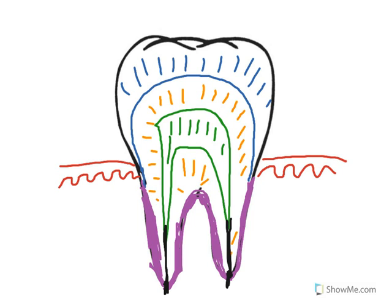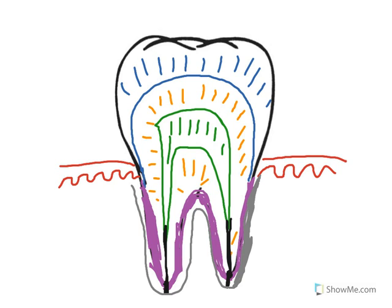Coming in from the gingiva, of course, we have the alveolar bone, and we don't really care about that at this point. But what we do care about — and I'm going to use gray to pick this — is a substance called the periodontal ligament. The periodontal ligament will anchor the tooth in, and it's between the gum and the tooth, on the outside of the tooth coming up against the cementum.